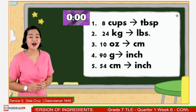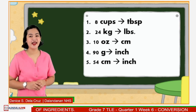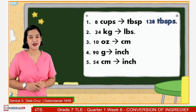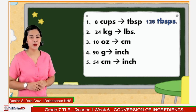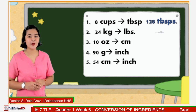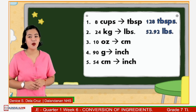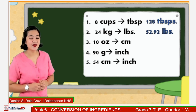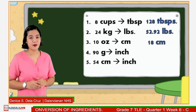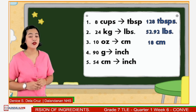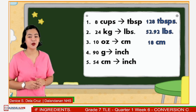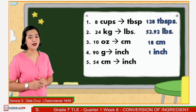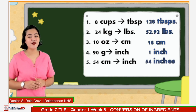Time's up! 90 grams is equivalent to 1 inch. And lastly, number 5: 54 centimeters is equivalent to 54 inches.